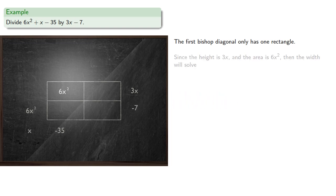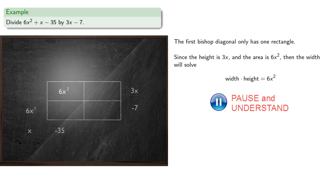And since the height is known, it's 3x, and the area is 6x squared, then our width, because it's a rectangle, must solve width times height equals 6x squared. We know the height is 3x, and that tells us the width is 2x.